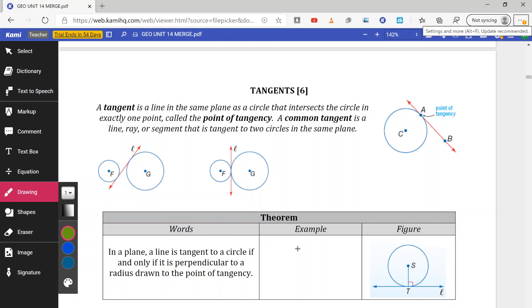When we talk about circles, we can also have what's known as a point of tangent. So we're going to take a look at what's known as tangents.